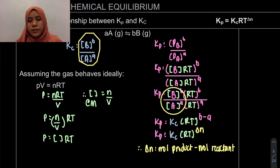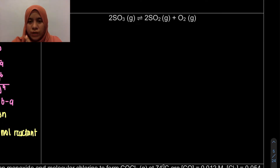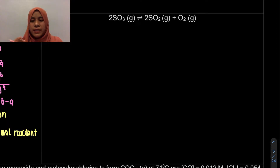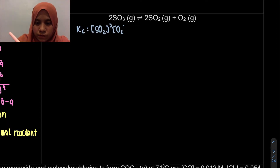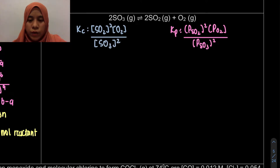So this is how to derive Kp equal to Kc times RT to the power of delta N. This is a general equation. Now let's look at how to write it down given a specific equation, which is what you'd do in a practical question.